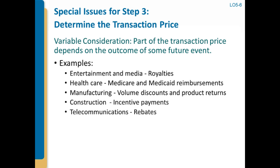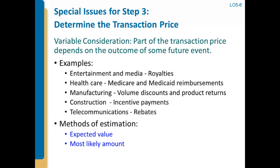It's important to think broadly about variable consideration — anything that dials up or down the amount the seller is entitled to receive falls under this umbrella. In entertainment and media: royalties. Health care: reimbursements from Medicare and Medicaid. Manufacturing: volume discounts, product returns. Construction: incentive payments. Telecommunications: rebates. The standard specifies that we need to go through either an expected value or most likely amount estimation approach, depending on what's most appropriate for the contract. There's judgment just in figuring out which approach to use.